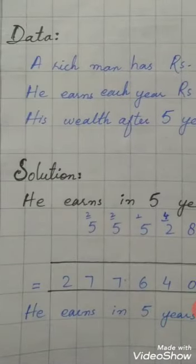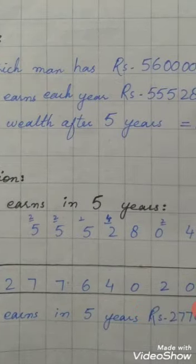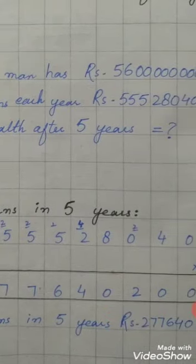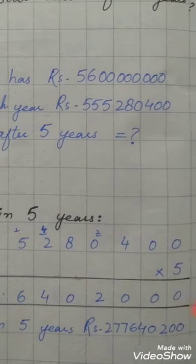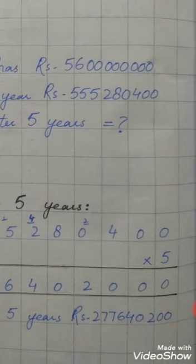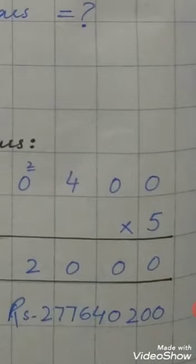Let's start our solution. The solution is simple. First we have to find how much he earns in five years, then add it to his total wealth to get the final answer.